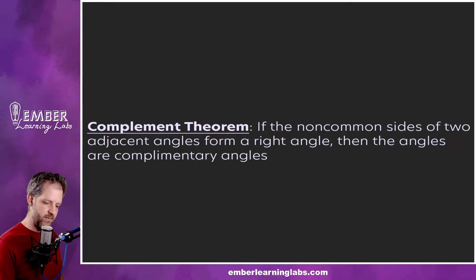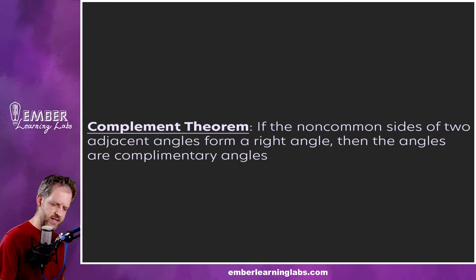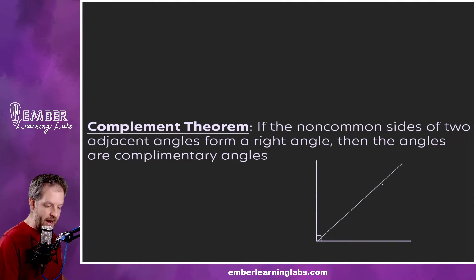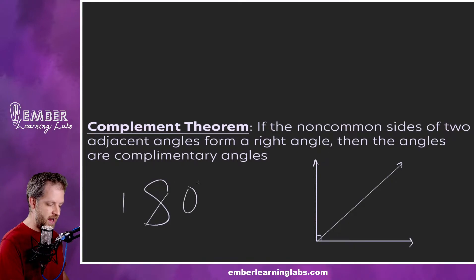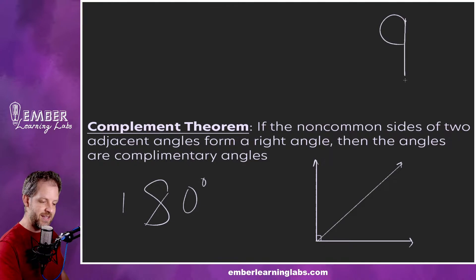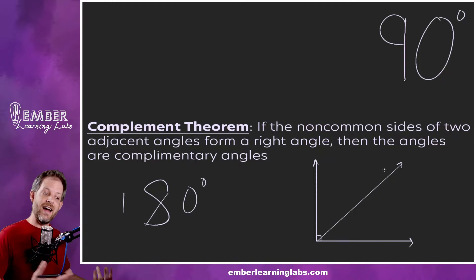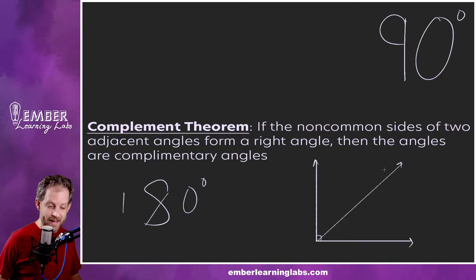In addition to the supplement theorem, there's also the complement theorem. The complement theorem says if the non-common sides of two adjacent angles form a right angle, then the angles are complementary. Supplementary starting with an S gives us 180 degrees; complementary starting with a C gives us 90 degrees. So if their larger angle makes 90 degrees, then they are complementary — complementary angles add up to 90. It can be proven, so it's a theorem instead of a postulate.